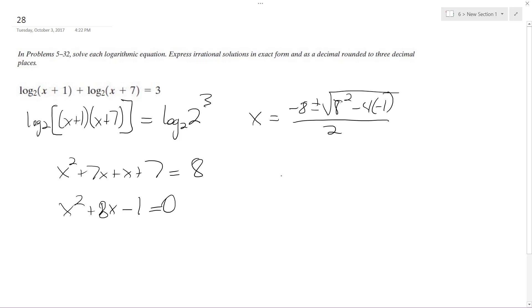And then finally, getting the roots, I can only have a positive root, so I get x is equal to negative 4 plus the square root of 17. Because we can't have a negative inside the logarithm.